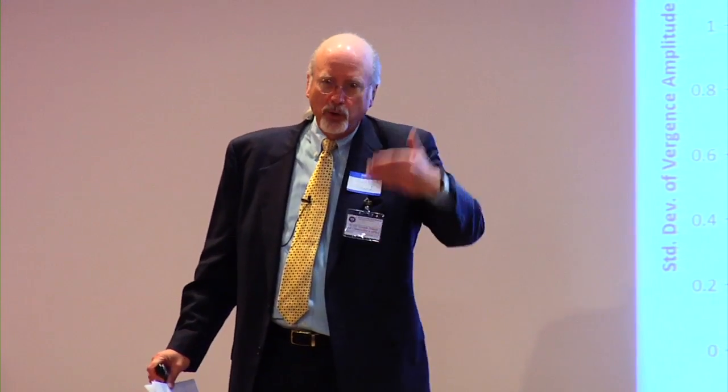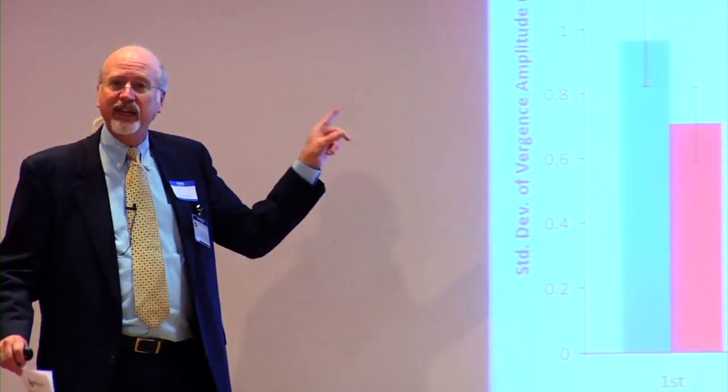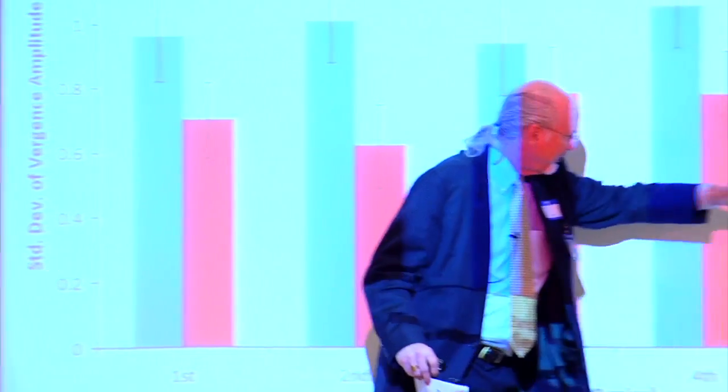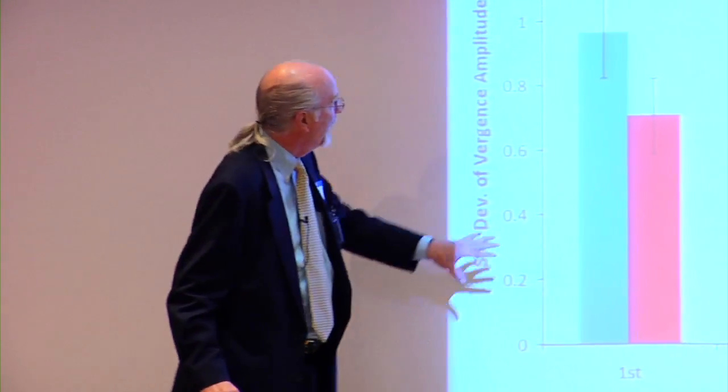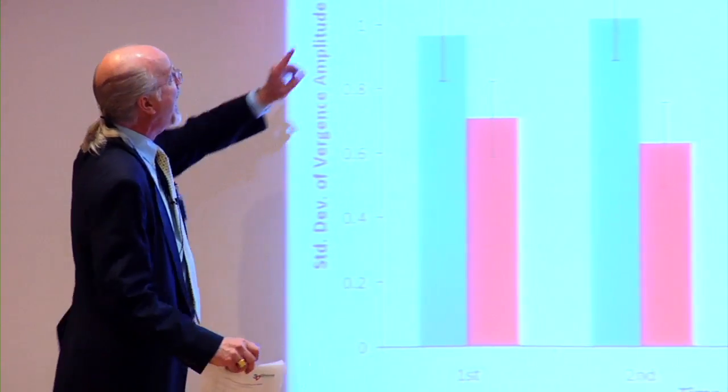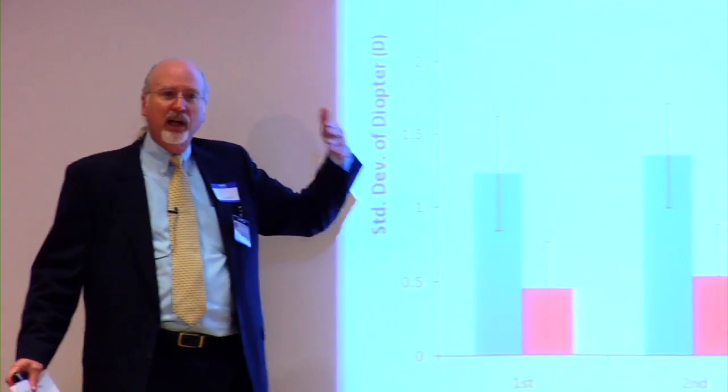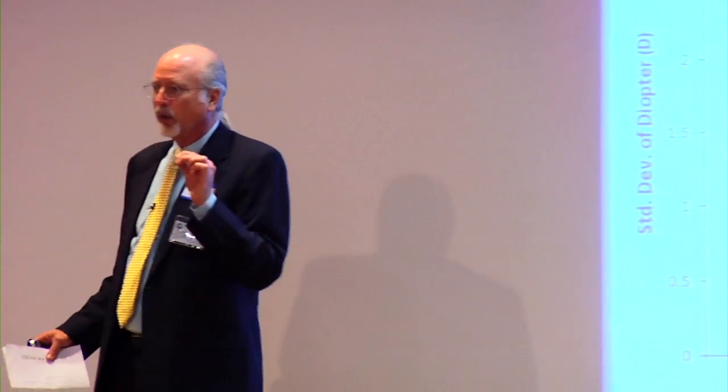Here's one study we did at the VPI — I want to acknowledge Intel, who helped sponsor many of these studies. We had a group of subjects view the same display and the same content in both 2D and 3D, and we simultaneously measured the vergence position and the accommodative state of the eyes. These are the standard deviations of vergence and accommodation across different 20-minute epochs of watching a 100-minute movie. For each epoch, there was more change in vergence response during 3D viewing than 2D viewing. The eyes also showed more accommodative response during 3D viewing than 2D viewing.